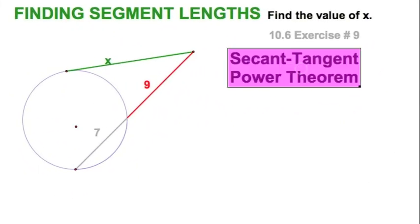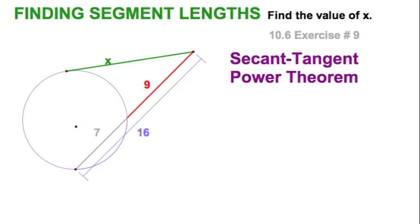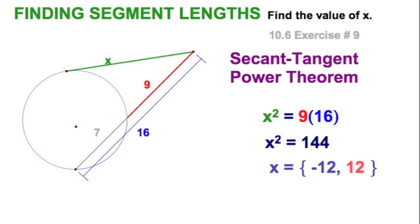Well, this is a secant-secant power theorem problem. And, it's as straightforward as you can get. You've got, right here, drawing the secant. We've got a secant of 16. So, we've got red times blue equals green squared. We'll set that up. Easy, easy. X squared is 144. We'll solve that.